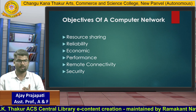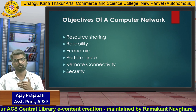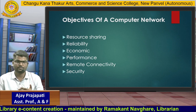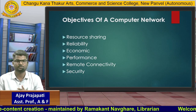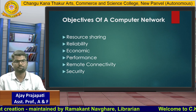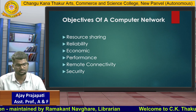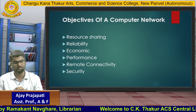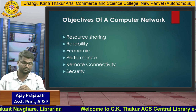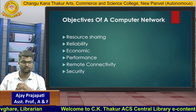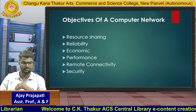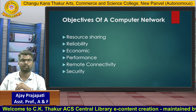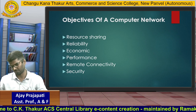The sixth objective is security — our files are secured in the network. File sharing is secured, meaning if one user is sharing a file and a second user is also sharing, a third unauthorized user cannot intervene. To recap, the objectives of a computer network are: resource sharing, reliability, economic, performance, remote connectivity, and security.